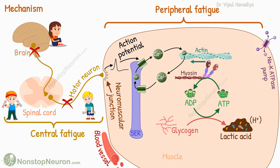Factors at the level of muscle are included in peripheral fatigue. First, impairment in the initiation or propagation of action potential decreases muscle performance. Second, impaired calcium release and reuptake impairs the muscle's ability to generate force efficiently. Third, and one of the most important factors, the depletion of energy sources such as ATPs, phosphocreatine, and glycogen — without sufficient energy supply, muscle contractions become weaker, leading to fatigue.